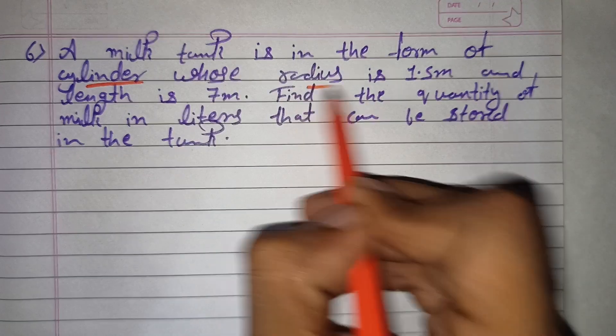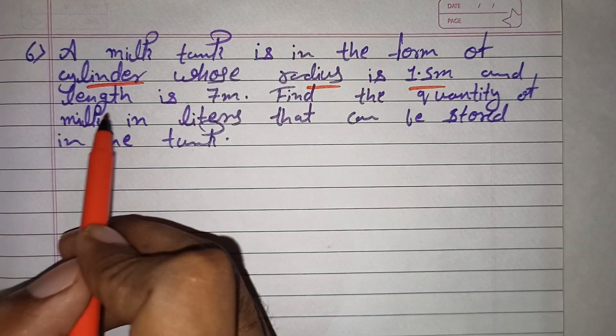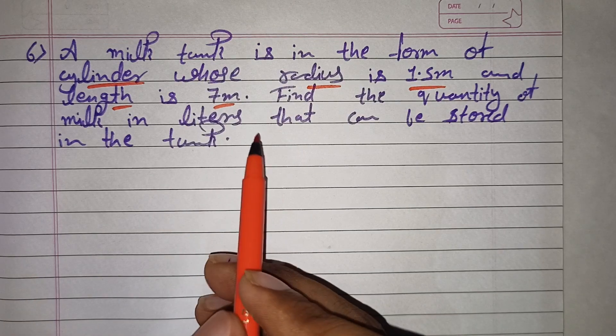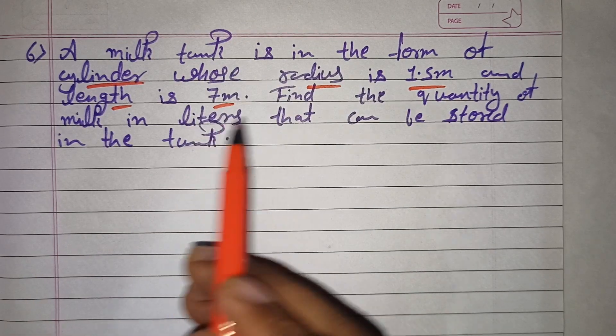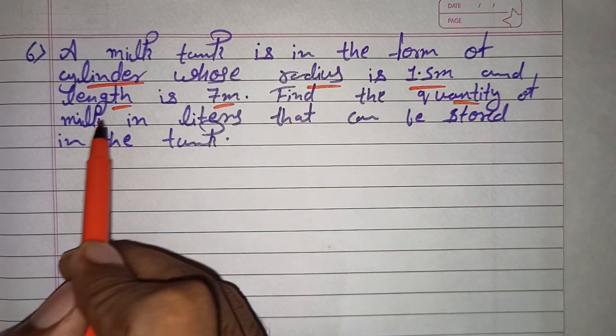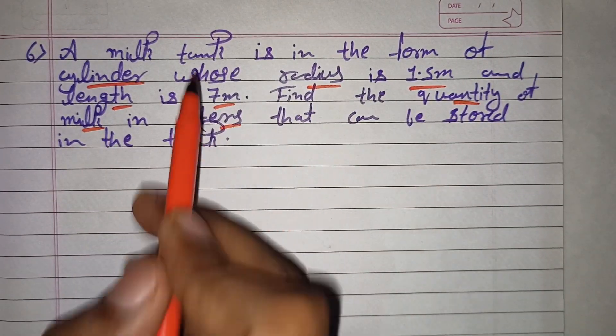You have been given the radius is 1.5 meters and length is also given. So you have to tell how much the tank can hold, the quantity in the tank.